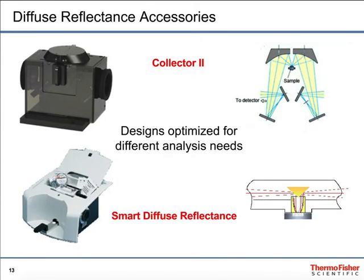Here are two of the accessories used in diffuse reflectance. At the top is the Collector 2 — you can see the sample located at the center beneath the clamshell of two mirrors on either side. This one is used very successfully in gemstone research, where diamonds or other gemstones are placed on that sampling location and the beam passes through them. The bottom one is a more classical diffuse reflectance setup, where the beam comes in, reflects off the sample, and is collected in a backscatter mode before being sent on to the optics.